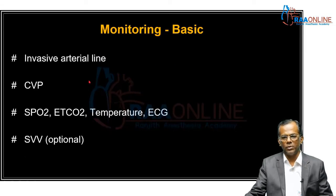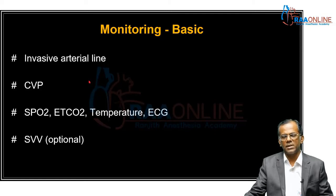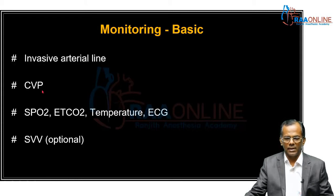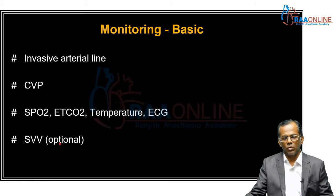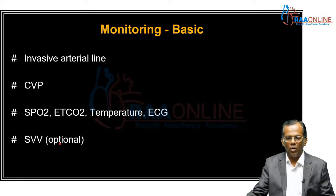What monitoring would we use? The basic monitoring for pulmonary hypertension patients coming for non-cardiac surgery would be an invasive arterial line, a central venous pressure monitoring line, pulse oximetry, end-tidal carbon dioxide monitoring, temperature monitoring, and a 5-lead ECG if possible. Stroke volume variance, which helps in telling what is the volume status of the patient, is an optional monitoring tool.